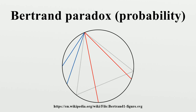This and other paradoxes of the classical interpretation of probability justified more stringent formulations, including frequentist probability and subjectivist Bayesian probability.